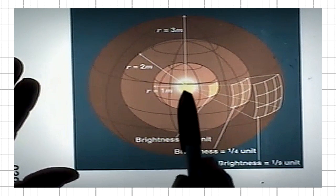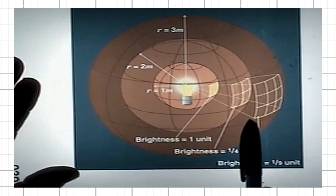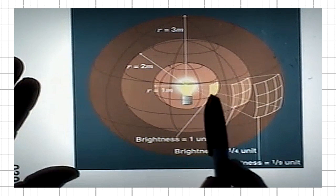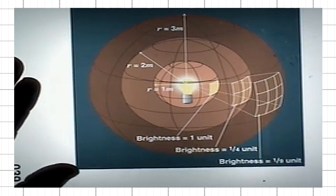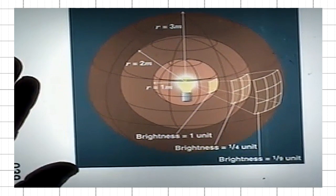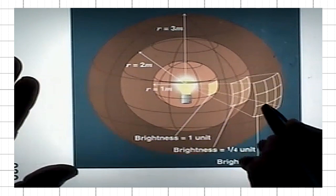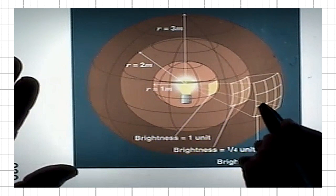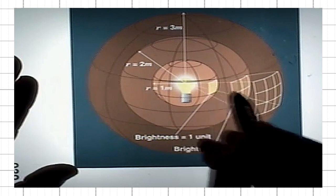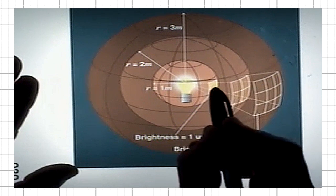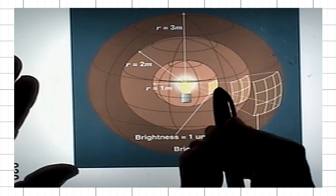At a distance of three meters, the same amount of energy now is distributed over nine unit areas. Then, the brightness here is one-ninth of what it is at the distance of one meter. Here, it's one quarter of what it is at the distance of one meter.